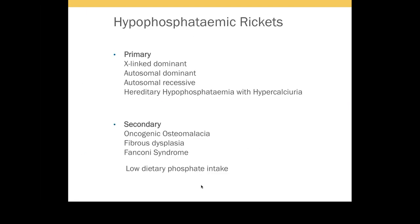Hypophosphatemic rickets can be primary or secondary, and is inherited in an X-linked dominant, autosomal dominant, or autosomal recessive manner. There is also hereditary hypophosphatemic rickets with hypercalciuria. Secondary types include: oncogenic osteomalacia (tumors causing hypophosphatemia), fibrous dysplasia with or without McCune-Albright syndrome, Fanconi syndrome where the proximal tubule is dysfunctional, and low dietary phosphate intake.